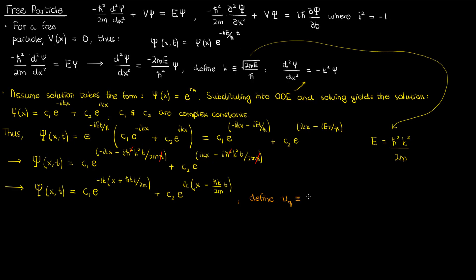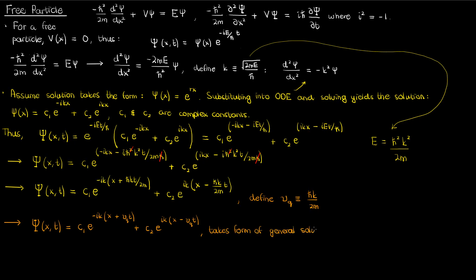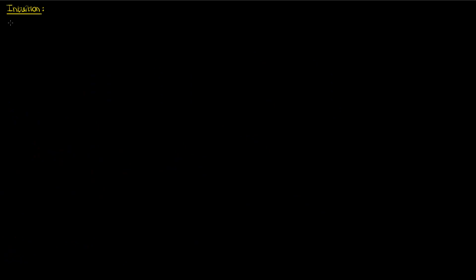What I'll do next is define another constant v sub q as h-bar times k over 2m. Using this defined constant, my wave function becomes the following. This equation takes the form of a general solution to the wave equation — the first term represents a backwards-traveling wave and the second term is a forwards-traveling wave. My video on the d'Alembert solution to the wave equation gives some intuition as to why, and I'll go over that intuition here.